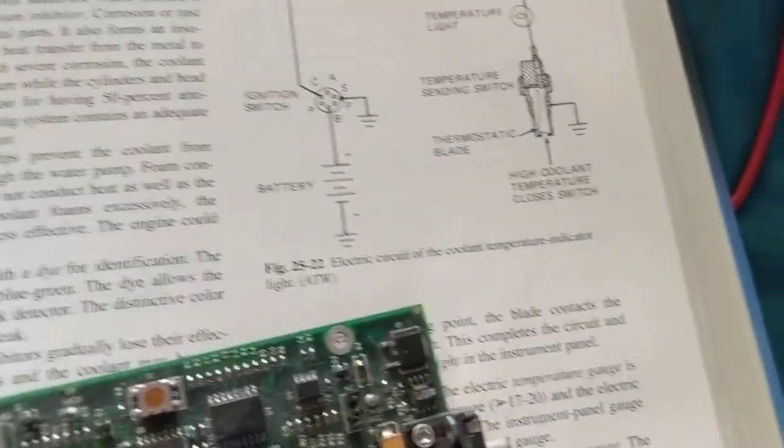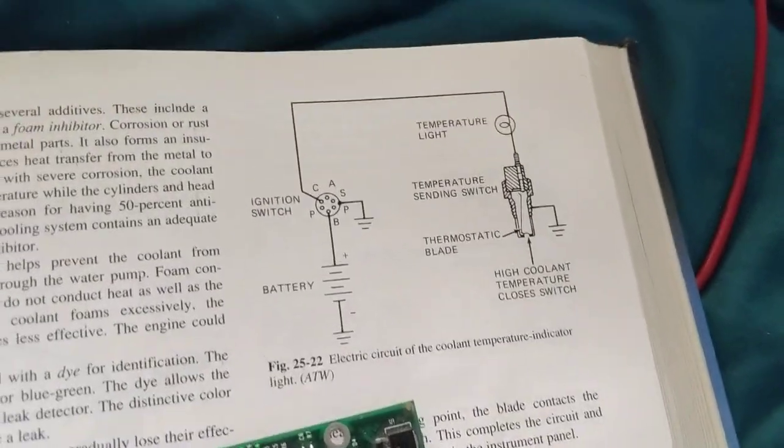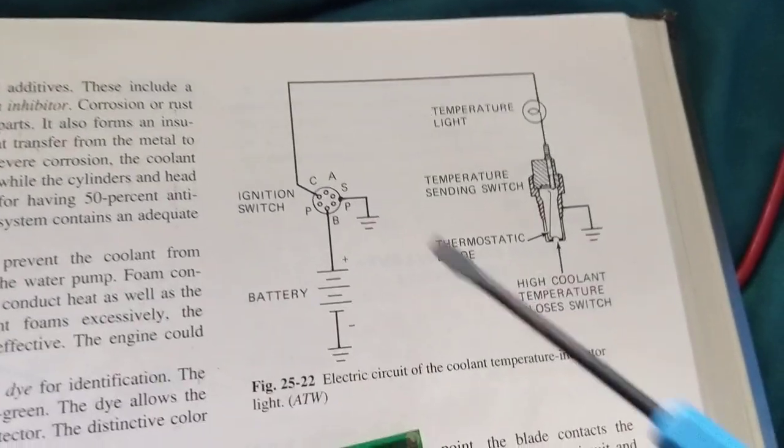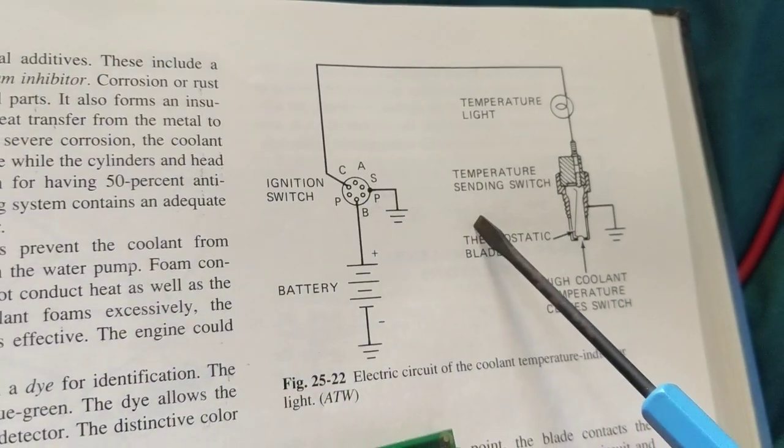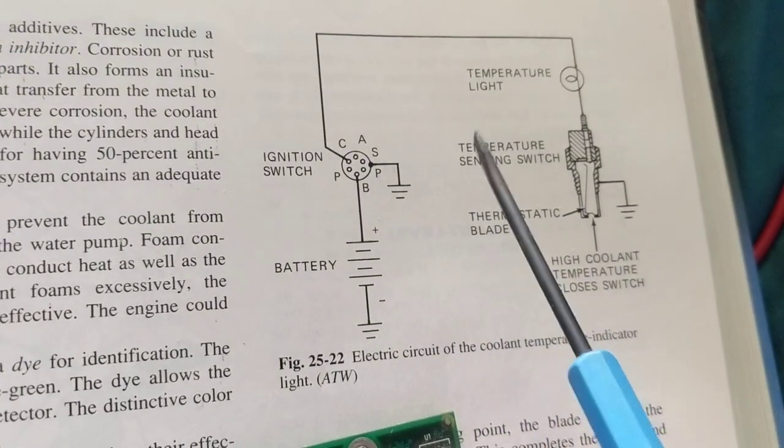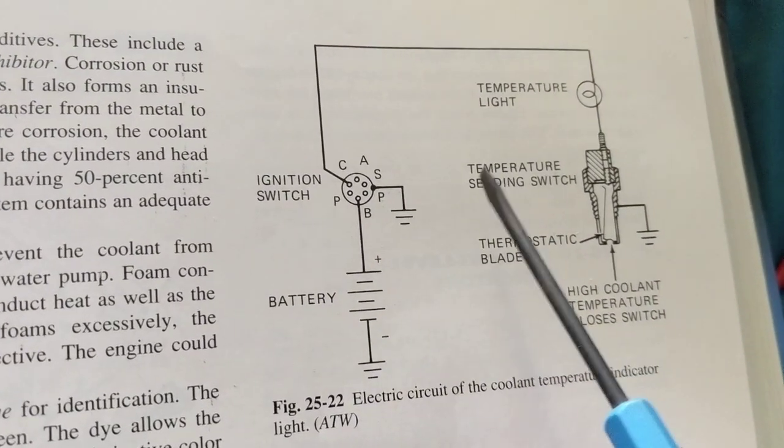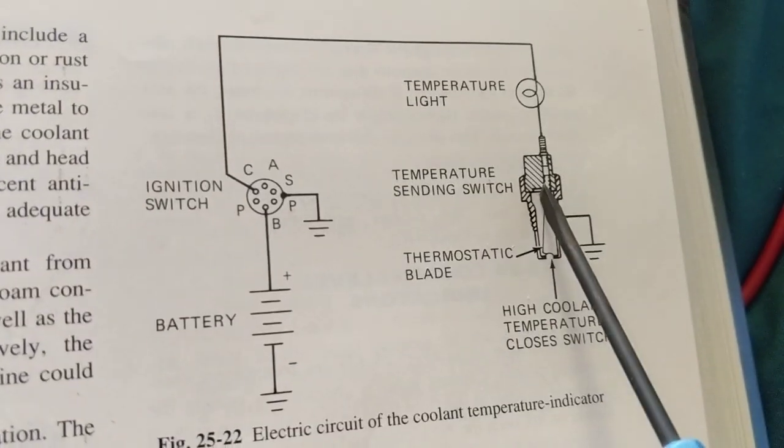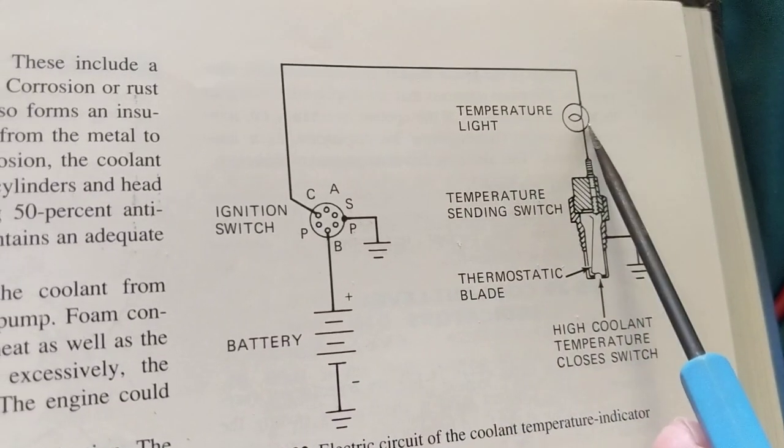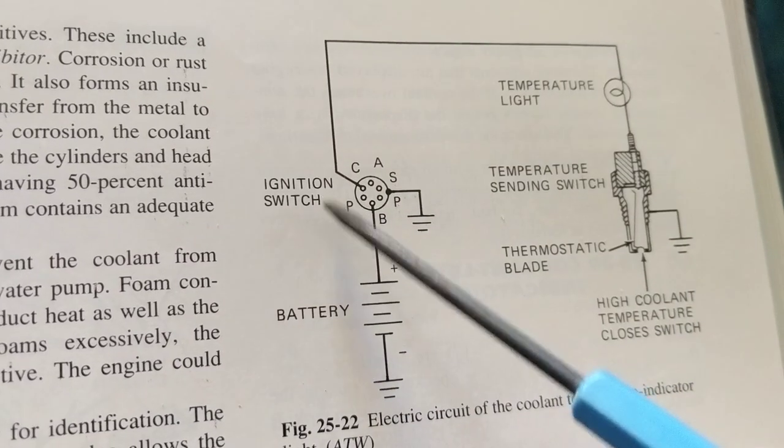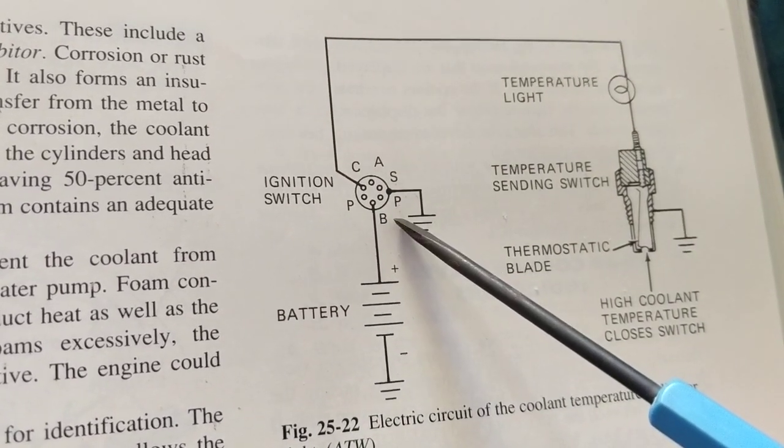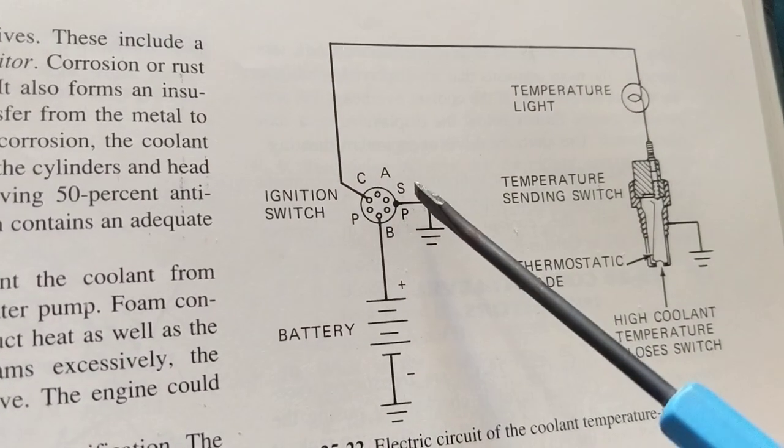Hello, welcome once again. For any automotive schematic or electrical schematic, there's always symbols and components. For example, in this one we have an ignition switch, we have the component over here, we have a temperature light, a bulb. The ignition switch is applied in several positions as is referred to in this position over here.